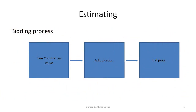The tender process is further demonstrated on this page. The conversion process from true commercial value to bid price is referred to as adjudication or director's adjustment.